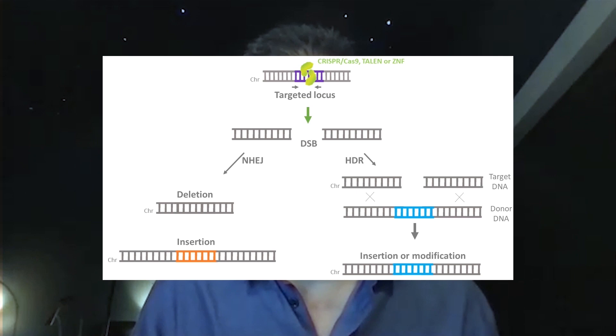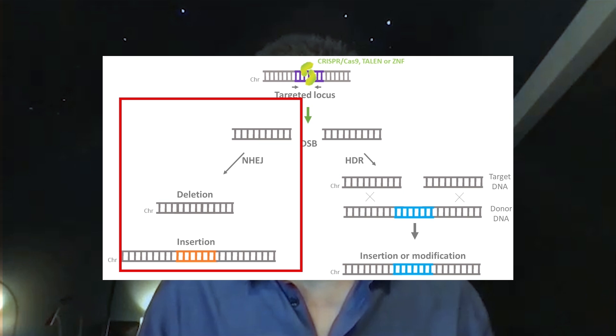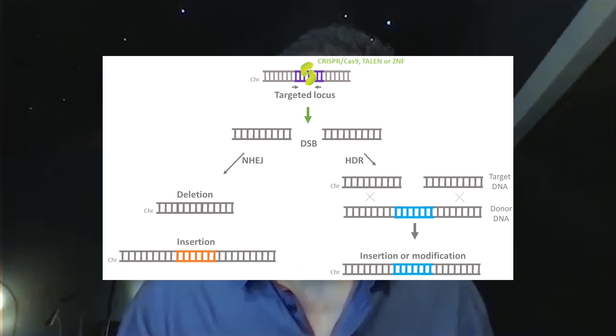How many of those 43 trials are trying to use a double-stranded break to induce precise gene repair through homology-directed repair? The answer is zero. All of the therapeutic trials using CRISPR right now are using CRISPR to disrupt genes, because the predominant fate once you make a double-stranded cut in a chromosome is gene disruption through indel formation — insertions and deletions. It's mostly deletions, so it should probably be called del-ins.